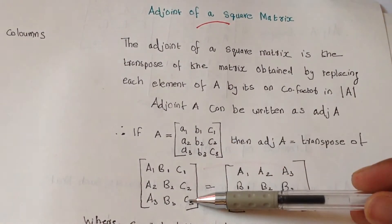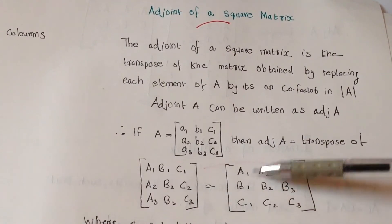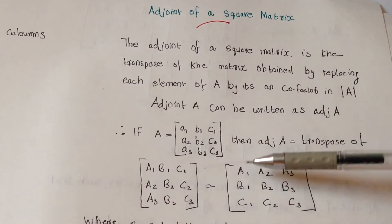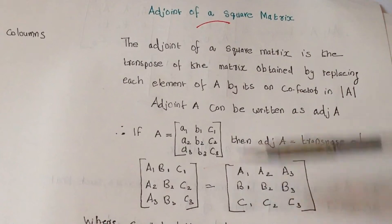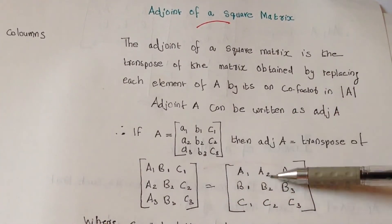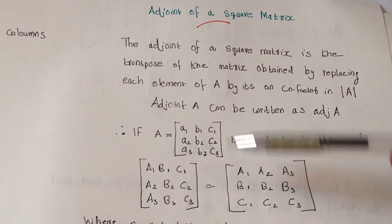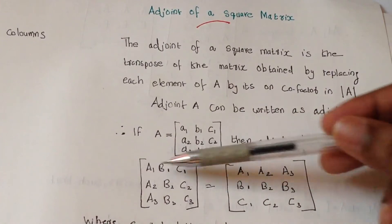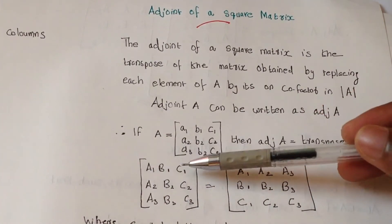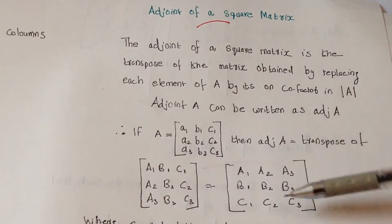For finding the adjoint A, we take the transpose of this matrix. Like a1 b1 c1 will become columns, and the row a2 b2 c2 will become this column. Whatever the rows are here, they will be converted into columns.